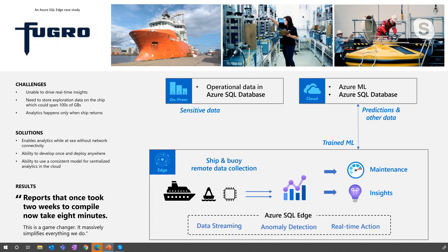This was not ideal for Fugro. There were multiple challenges the company faced. One, they were not able to run real-time insights — most analytics happened only after the ship had reached the coast. During the entire exploration process, the ship had to store hundreds of GBs of data, which is not cheap. So the company set about to fix these problems. What they did was move the data into Azure SQL Database — that was the first step towards moving to the Cloud. Then they also wanted to use the network edge, so they deployed Azure SQL Edge on various ships and buoys used on their unmanned vessels for collecting data.